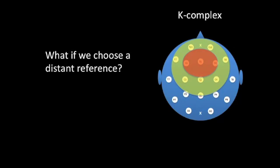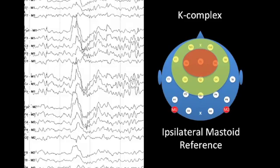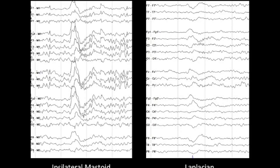So we can ask: what if we choose a distant reference? A distant reference might have the advantage of being very far from our broad electrical field, so that the comparison between the activity within our field and the distant electrode will be greatest. One type of montage to consider is a common reference montage to the ipsilateral mastoid process, which is far away from the area of interest. When we apply the ipsilateral mastoid montage, we get very high voltage activity accentuating the K-complex. Comparing the ipsilateral mastoid distant reference to the Laplacian, which compares only adjacent neighbors, we can see a dramatic difference in the electrical activity.